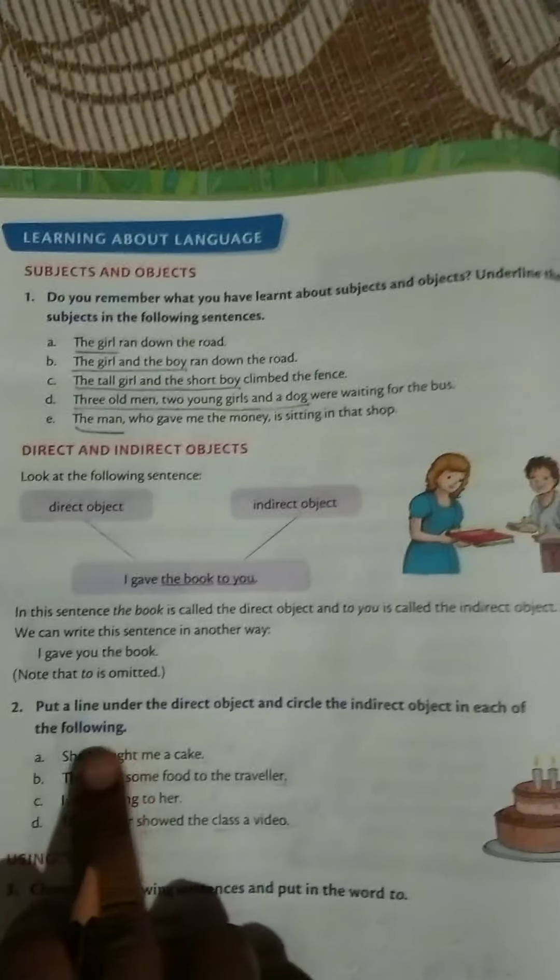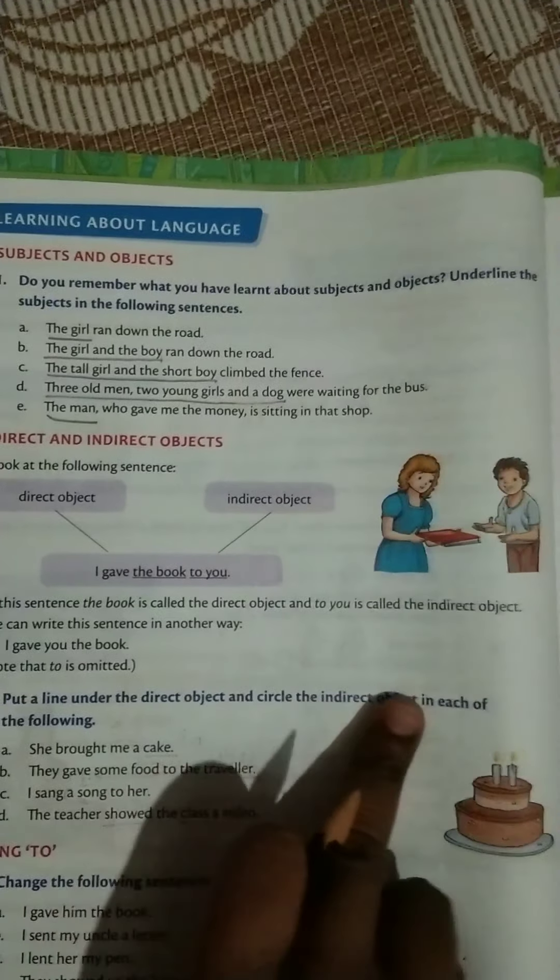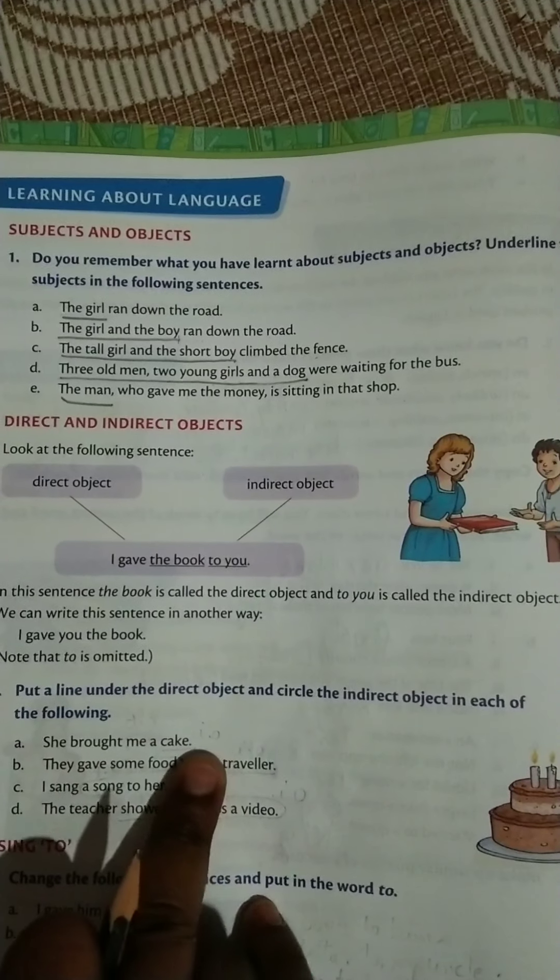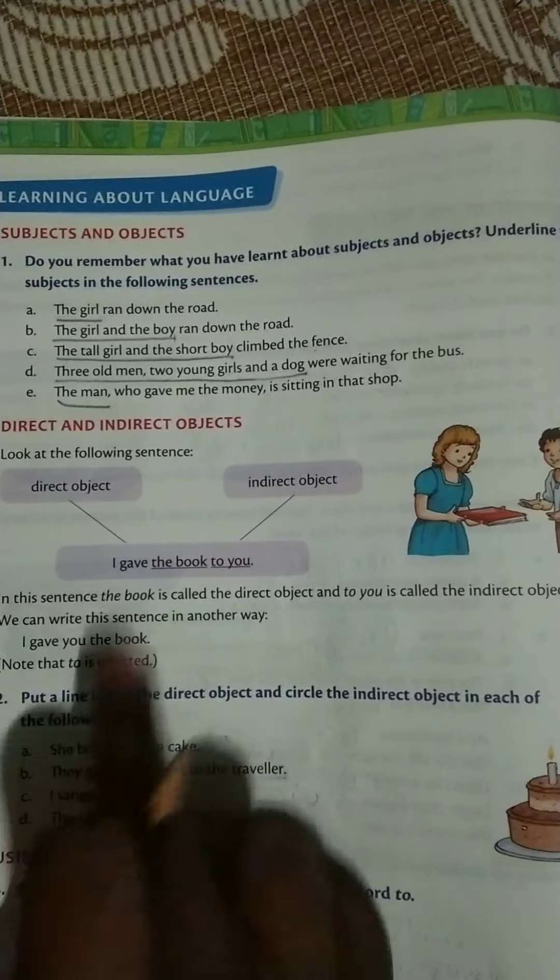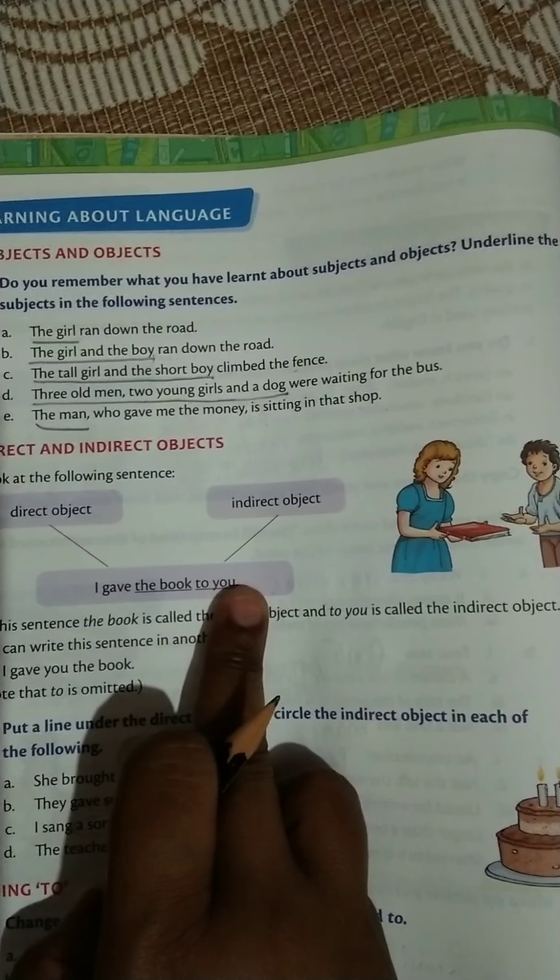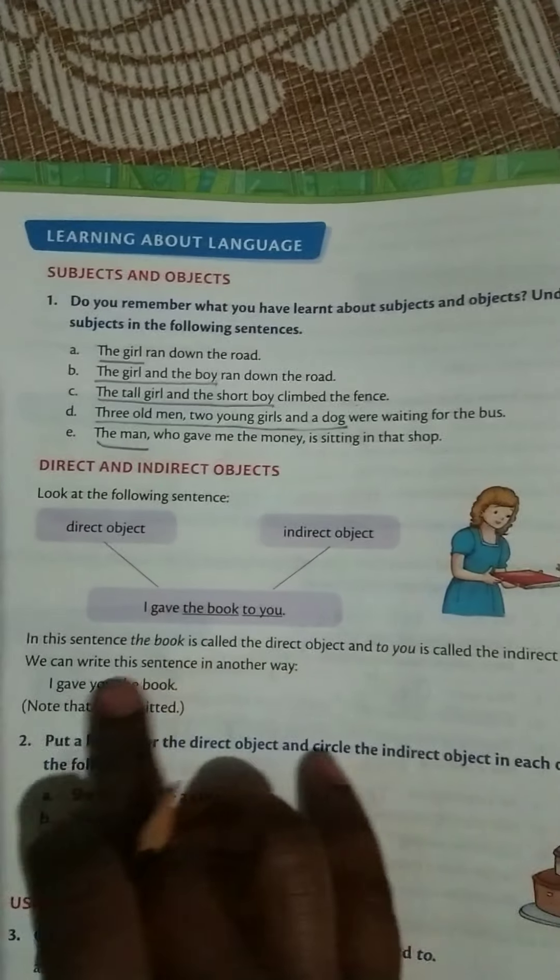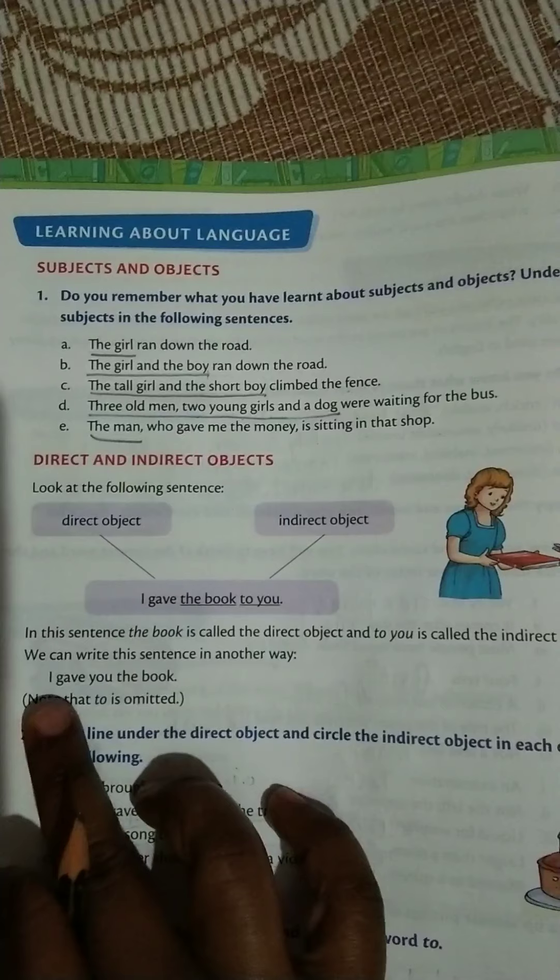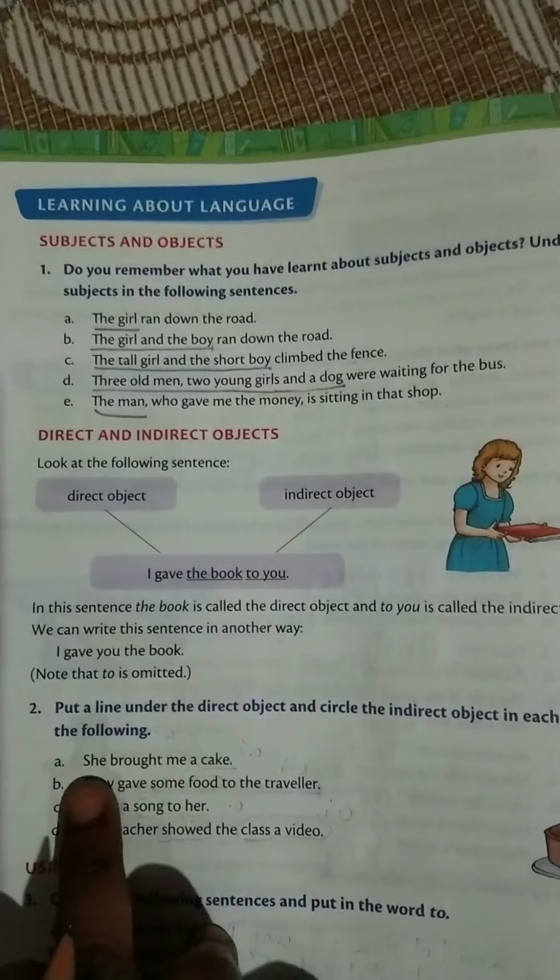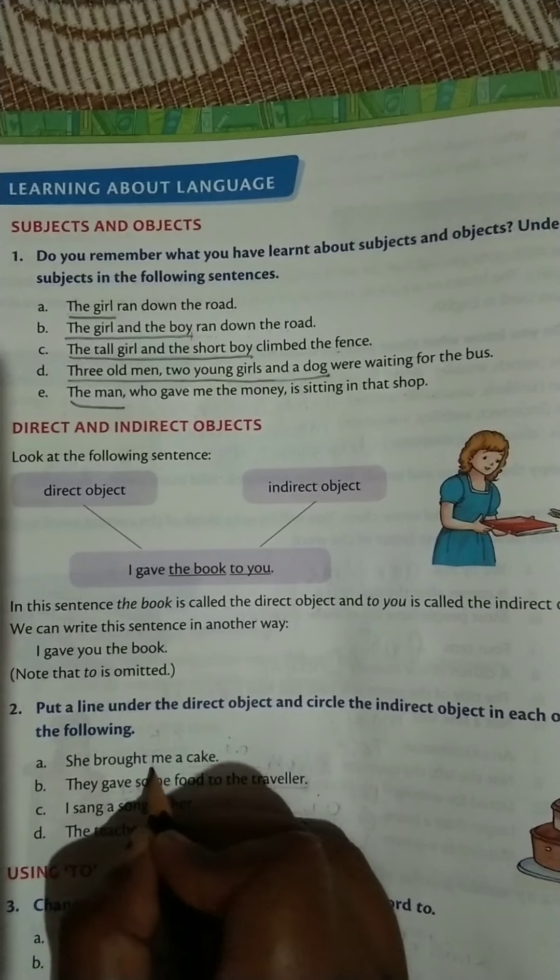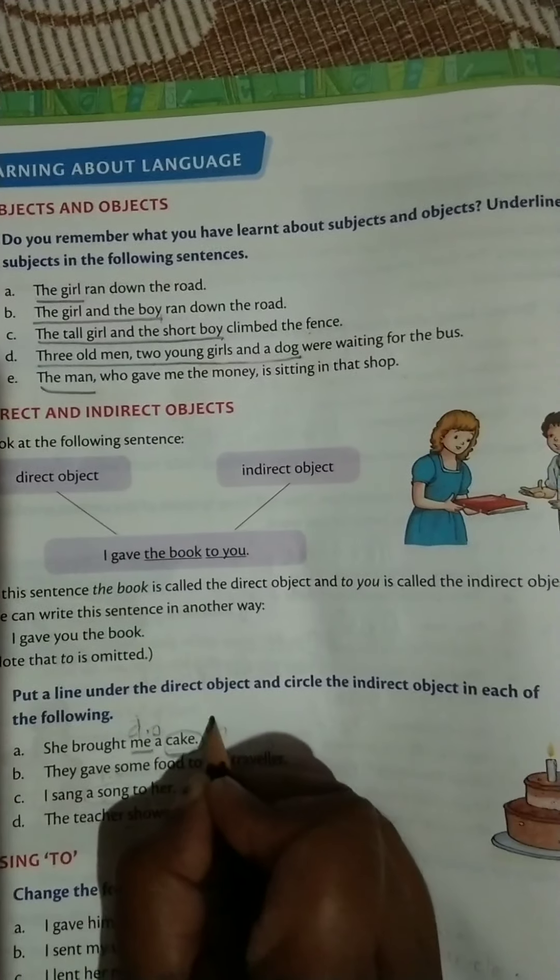Come to the next exercise. Put a line under the direct object and circle the indirect object in each of the following: she bought me a cake. Before discussing this exercise, I am going to explain this. I gave the book to you. In this, the book is the direct object and to you is the indirect object. In this sentence, the book is called the direct object and to you is called the indirect object. We can write this sentence in another way also: I gave you the book. She bought me a cake. In this, me is the direct object and cake is the indirect object.